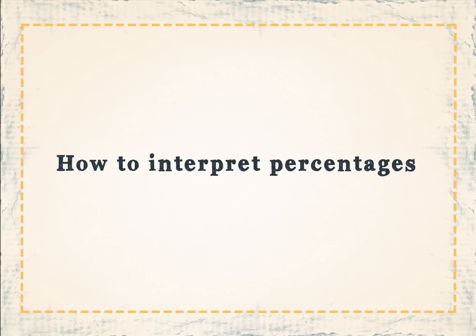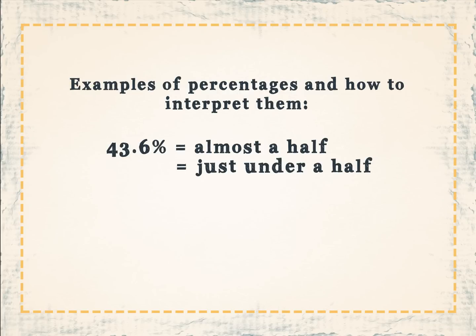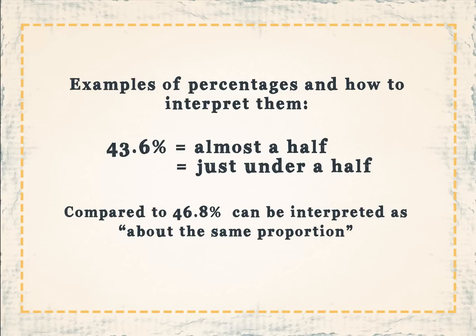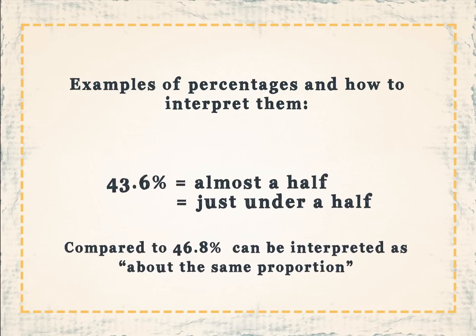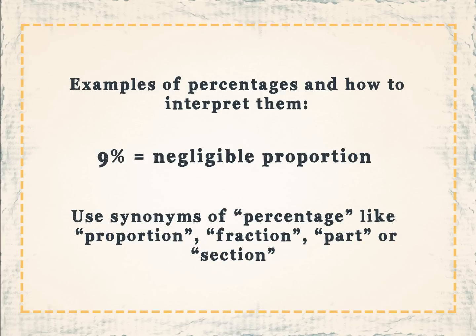How to interpret percentages: 43.6 percent is almost a half or just under a half. Compared to 46.8 percent, it can be interpreted as about the same proportion. 9 percent is a negligible proportion. Always use synonyms of percentage like proportion, fraction, part, or section.